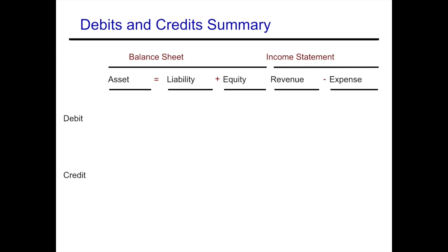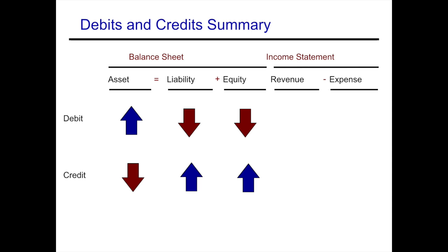Let's look at some balances in our accounts. We have assets equals liabilities plus owner's equity, and then we have our income statement accounts — revenues and expenses — and we want to see how these accounts are affected with debits and credits. Assets increase with debits and decrease with credits. Liabilities decrease with debits and increase with credits. Equity decreases with debits and increases with credits. Therefore, since revenues and expenses affect equity, revenues will decrease with debits and increase with credits.